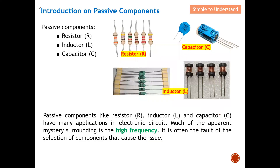Let's start by discussing passive components. Under passive components we have the resistor — this is how a resistor looks like. We also have the inductor; there are more than two types of inductor — some look almost the same as a resistor, and others are coil-shaped, wound round and round. Last but not least, we have the capacitor. There are a few series of capacitors which I will describe in the next few videos. So under passive components we mainly have these three types: resistor, inductor, and capacitor.